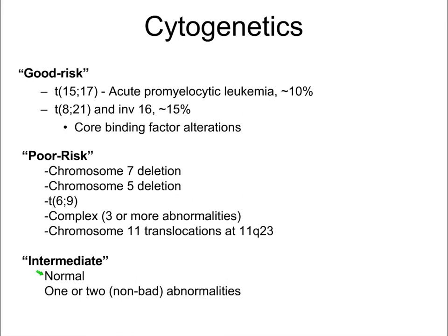Based on chromosomal analysis, we can say whether patients are good risk, intermediate risk, or poor risk. Some good risk abnormalities include t(15;17), which characterizes acute promyelocytic leukemia — also highly curable, because you can add all-trans retinoic acid, a vitamin derivative, to chemotherapy and cure the majority of these patients. You can also give a combination of all-trans retinoic acid and arsenic to cure a large proportion. The signature of the disease comes from that chromosomal change t(15;17).